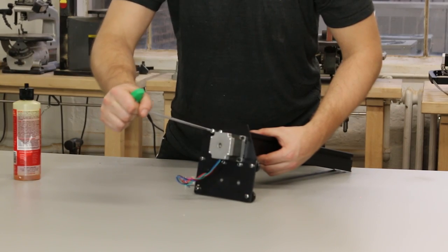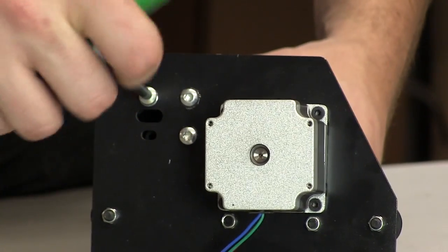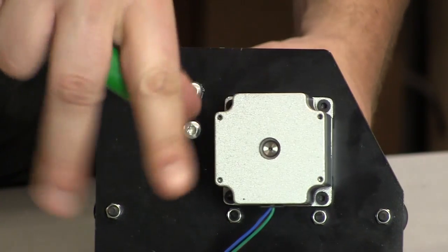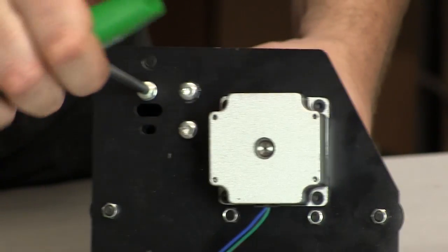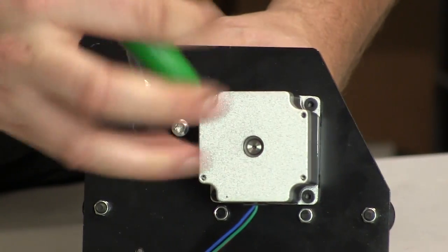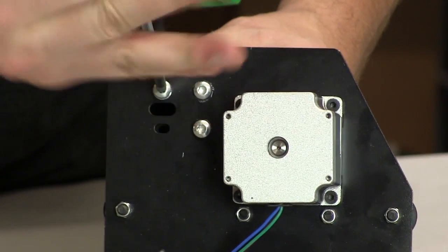With these self-tapping screws, we're going to use washers. And that's because we're putting these screws through a slot. This will allow us to adjust the distance between the two pieces of maker slide later.